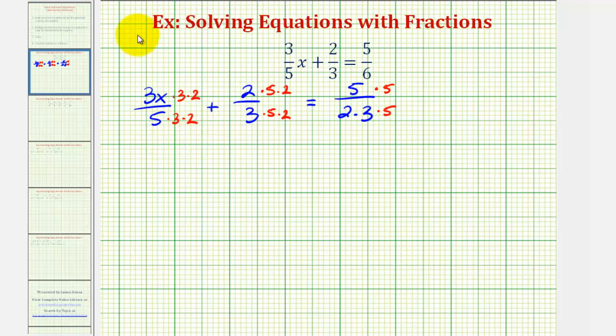Now we're going to rewrite the fractions. For this first fraction, we have 3 times 3 times 2 times x, that would be 18x over 30, plus the second fraction we have 2 times 5 times 2, that's 20 over 30, equals the fraction on the right would be 25 over 30.